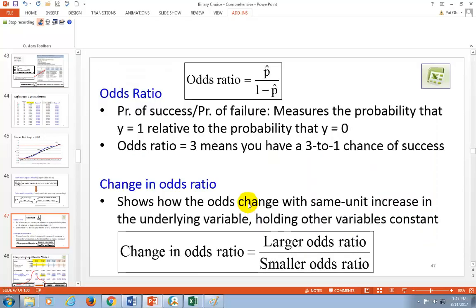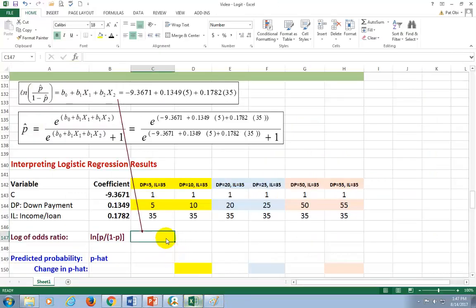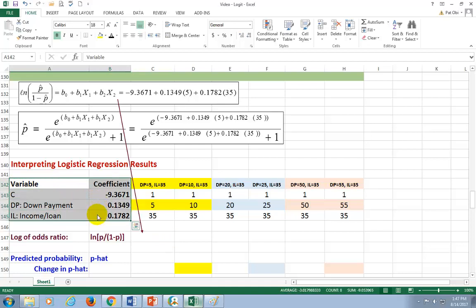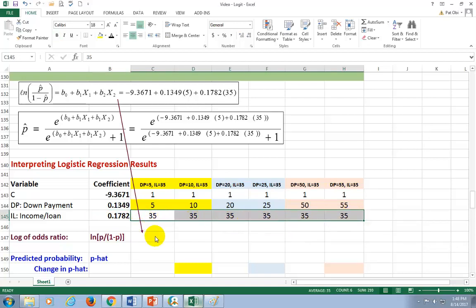So, let's go ahead and go to Excel and show the analysis. I've copied over the results from the eViews output. And here, the intercept is negative 9.3671. The coefficient for down payment is 0.1349, and the coefficient for income-to-loan ratio is 0.1782. Now, what I'm going to do here is to estimate probabilities holding income-to-loan ratio constant at 35%, and then observe how probabilities would change for different levels of down payment, as you see right here. As a quick reminder, note that the logistic regression model is simply the log of odds ratio. So, it isn't the probability, and that's what we're getting ready to calculate right now.